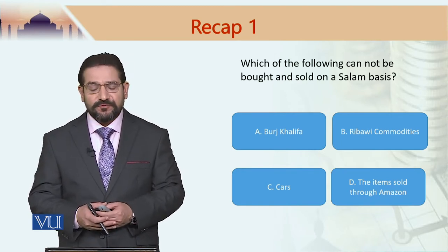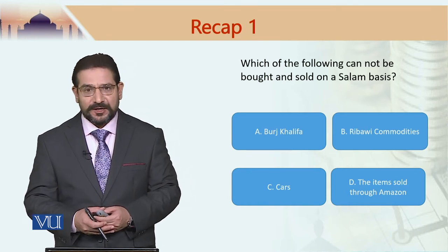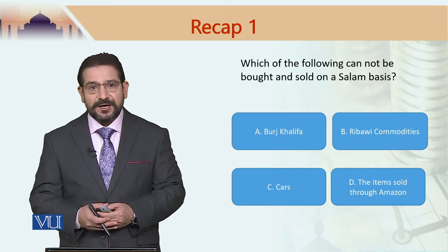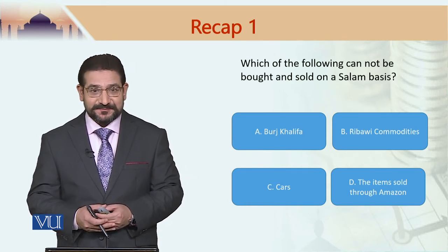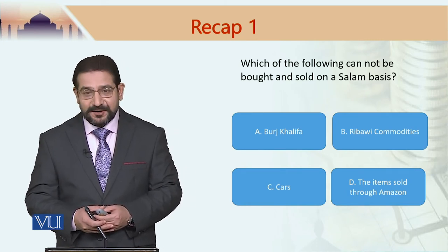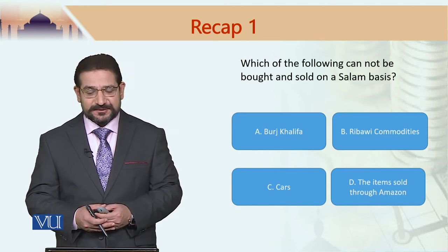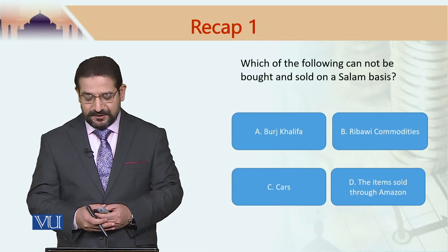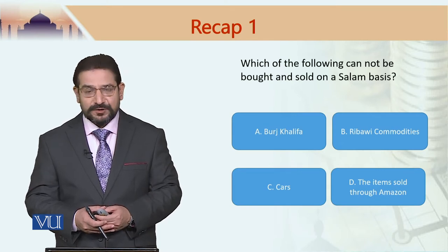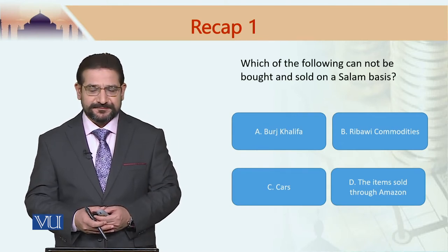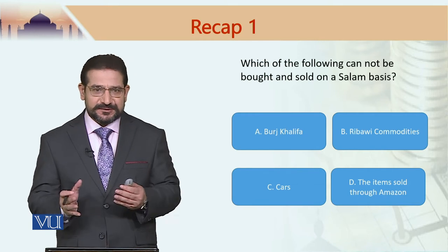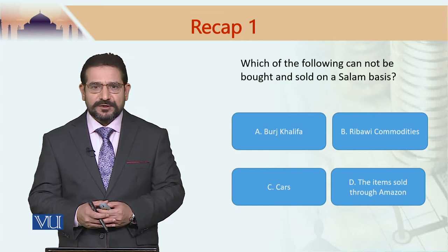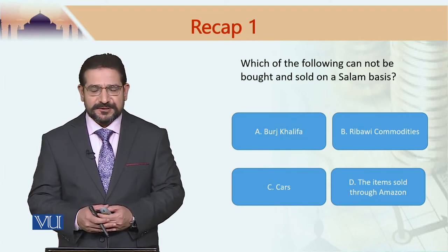This is a hypothetical quiz. The question is in front of you and I'm going to read it out: which of the following cannot be bought and sold on a salam basis? A: Burj Khalifa, B: Ribawi commodities, C: cars, and D: the items sold on Amazon.